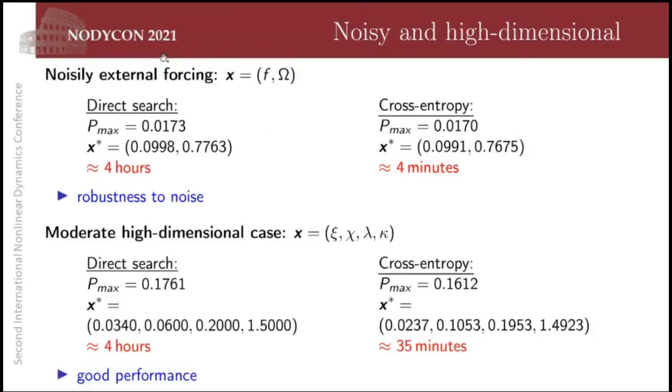But if we disturb the external excitation with noise, is this algorithm still robust? The answer is yes. With noise, the brute force search took four hours and our cross-entropy approach took four minutes to achieve essentially the same solution.